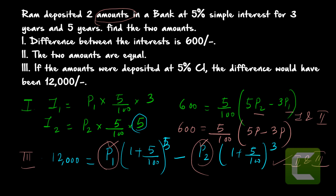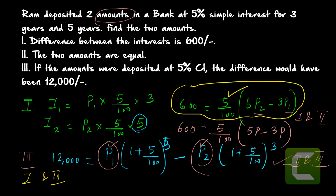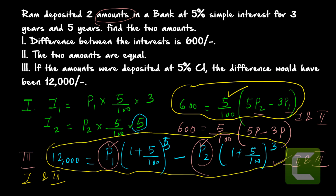Combining statements one and three: we get two equations — (5/100)(5P2 − 3P1) = 600 and P1 × (1 + 5/100)⁵ − P2 × (1 + 5/100)³ = 12,000 — with two unknown variables P1 and P2, so we can solve them. Therefore, statements one and three together are also sufficient. The conclusion is that any two statements together are sufficient to answer the question — the answer is option 3.